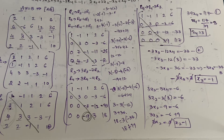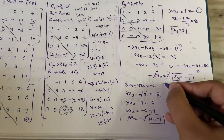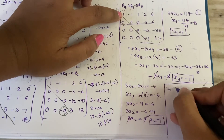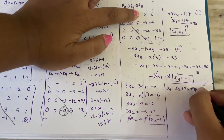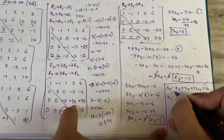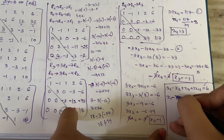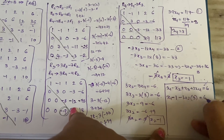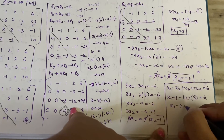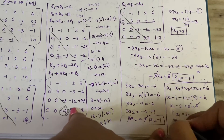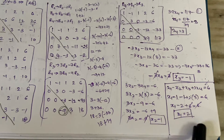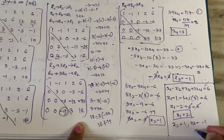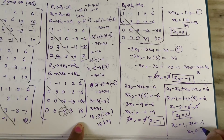From the first row: x1 - x2 + x3 + 2x4 = 6. Substituting x2=1, x3=-1, x4=3: x1 - 1 - 1 + 6 = 6, so x1 - 1 - 1 + 6 = 6, which gives x1 = 2.